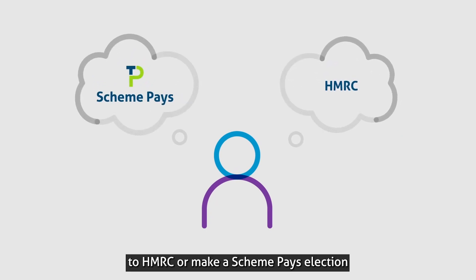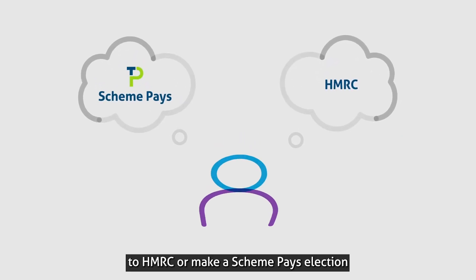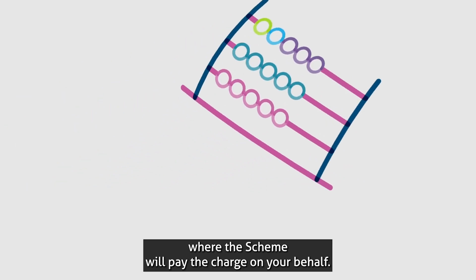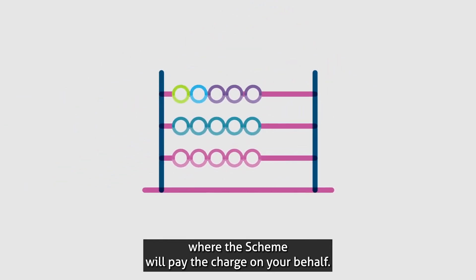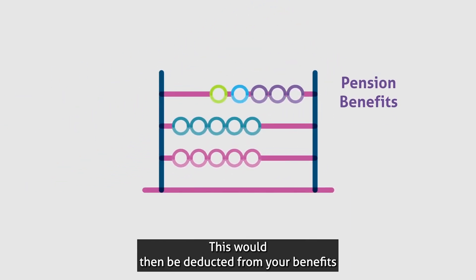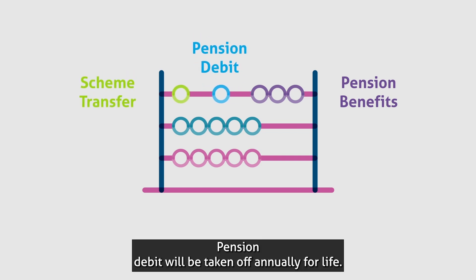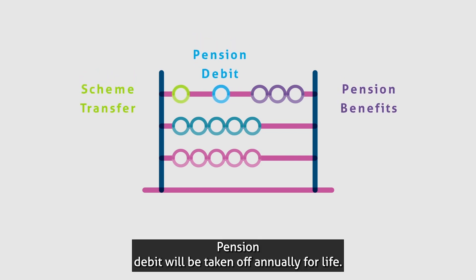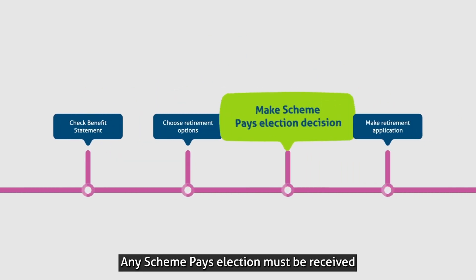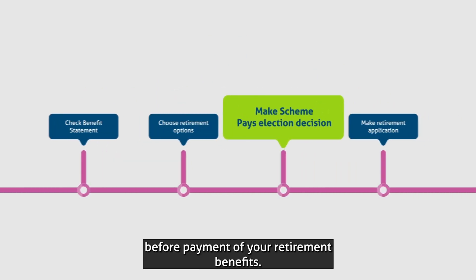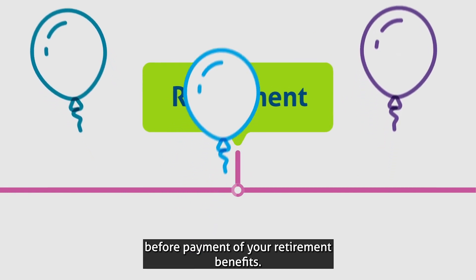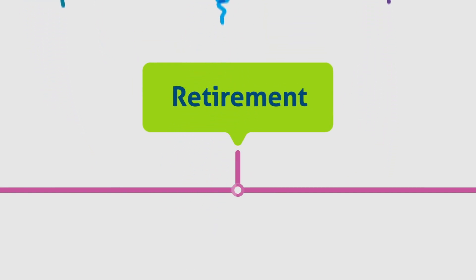You'll need to decide whether to pay the tax directly to HMRC or make a scheme pays election, where the scheme will pay the charge on your behalf. This would then be deducted from your benefits at the point of retirement or transfer from the scheme. The pension debit will be taken off annually for life. Any scheme pays election must be received before payment of your retirement benefits.